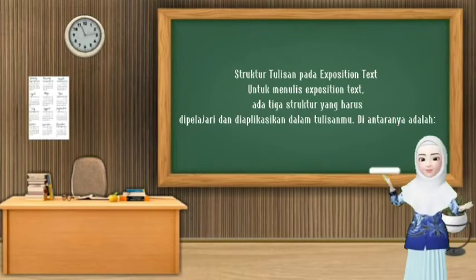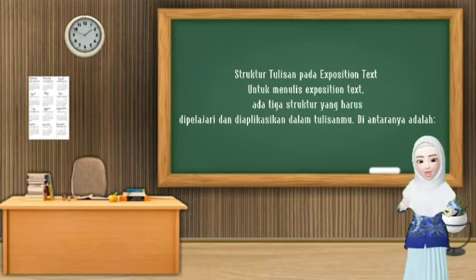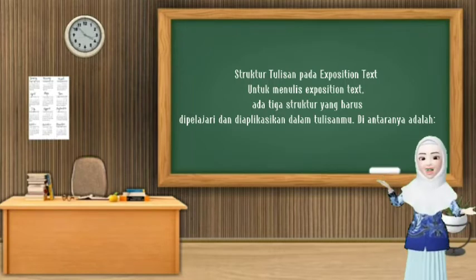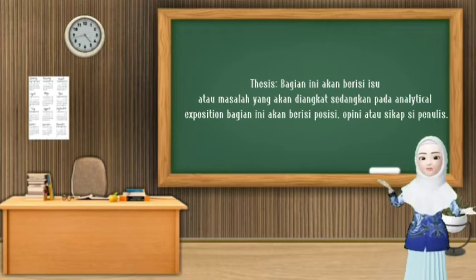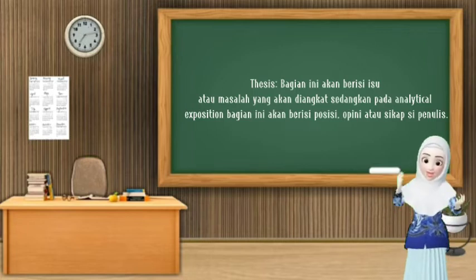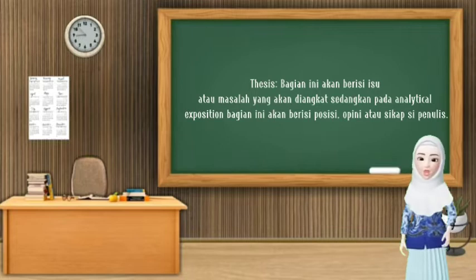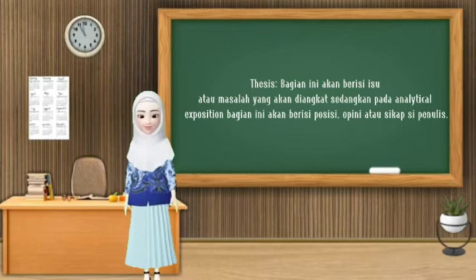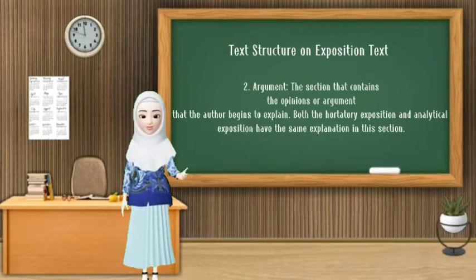Struktur tulisan pada exposition text — untuk penulis exposition text, ada tiga struktur yang harus dipelajari dan diaplikasikan dalam tulisanmu. Di antaranya adalah, untuk struktur yang pertama yaitu tesis. Bagian ini akan berisi isu atau masalah yang akan diangkat. Sedangkan pada analytical exposition, bagian ini akan berisi posisi, opini, atau sikap si penulis.